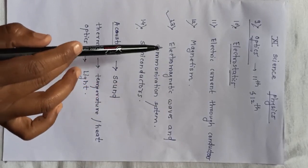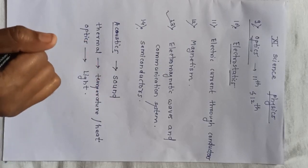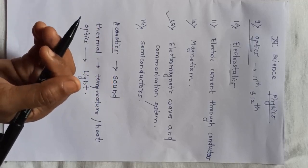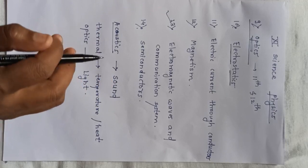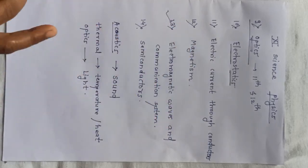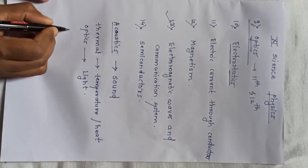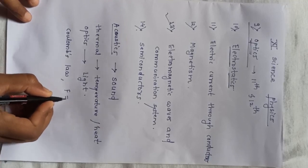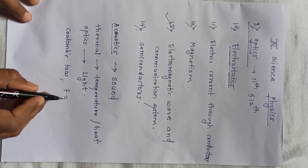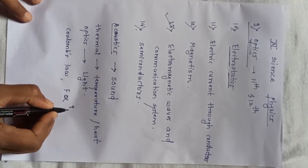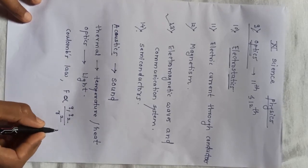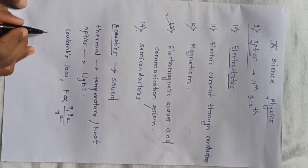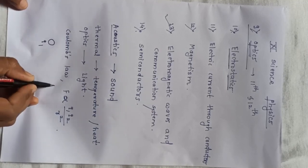Up to the 10th standard, you have studied about charge — what is a charge, what is the SI unit of charge (it's Coulomb), and the properties of charge, including the concept of electric field. In 12th standard we look at the advanced stage. The basic law in electrostatics is Coulomb's law. The electrostatic force of attraction or repulsion between two point electric charges is directly proportional to the product of the magnitudes of the two charges and inversely proportional to the square of the distance between them.